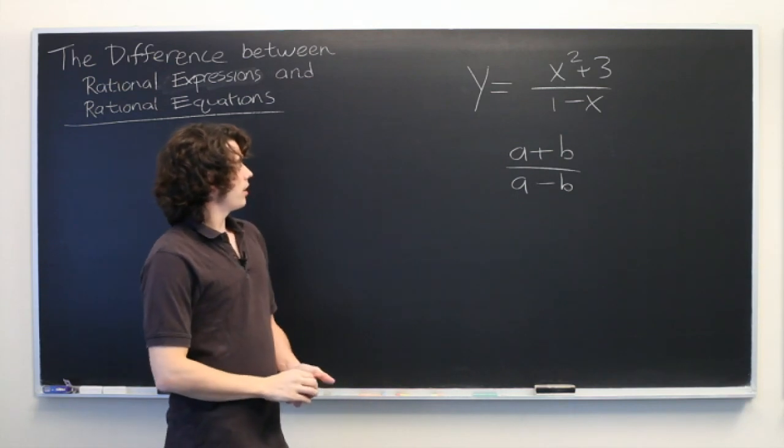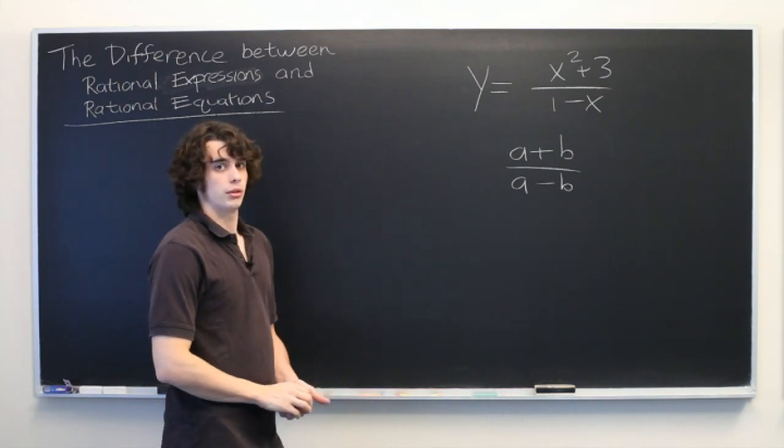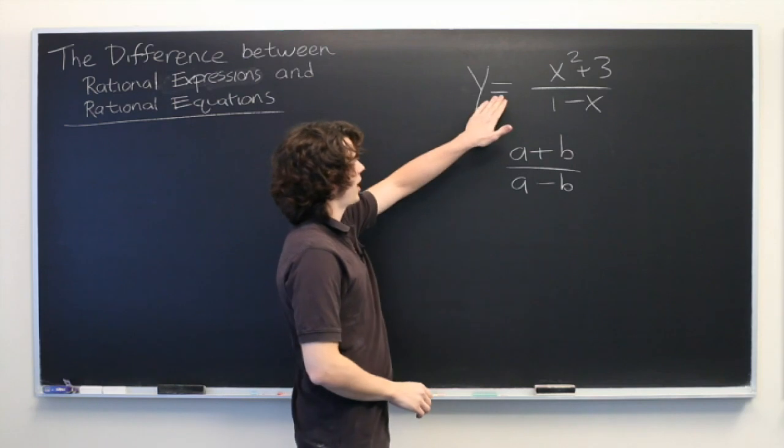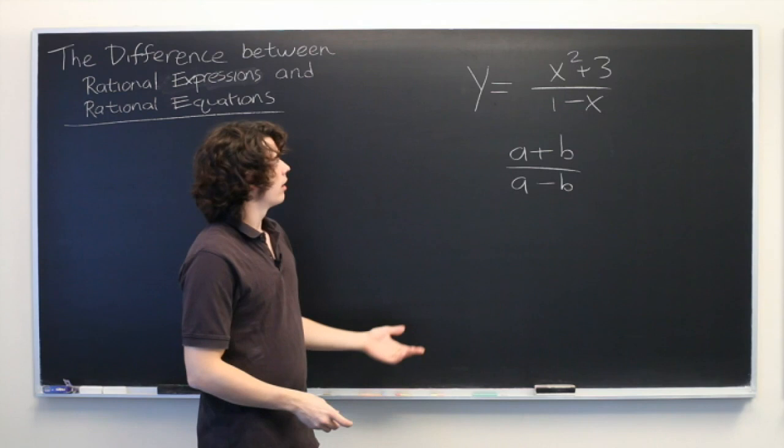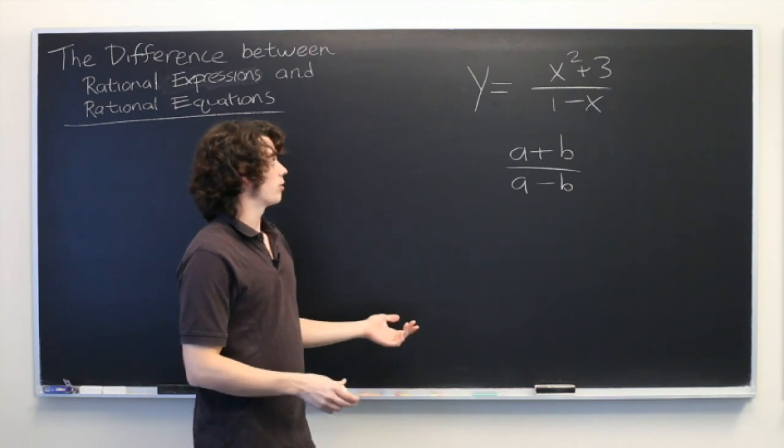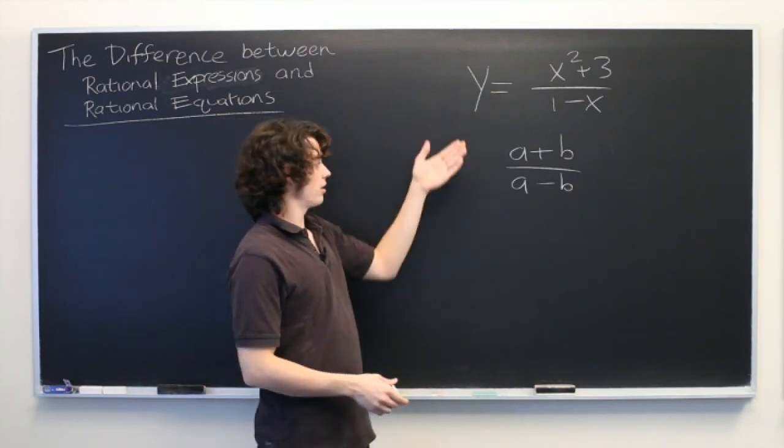So really when you get down to it, the only difference between these two, the top one has an equal sign and the bottom one does not. As is true for any equation or expression, equations have equal signs, expressions do not.